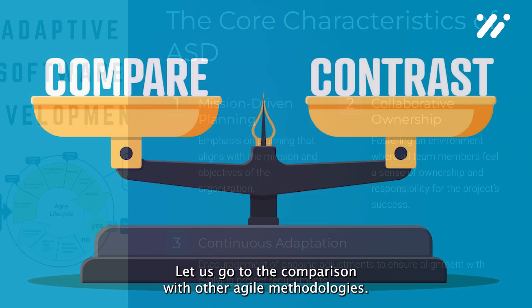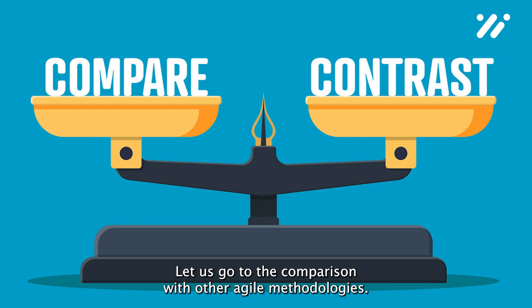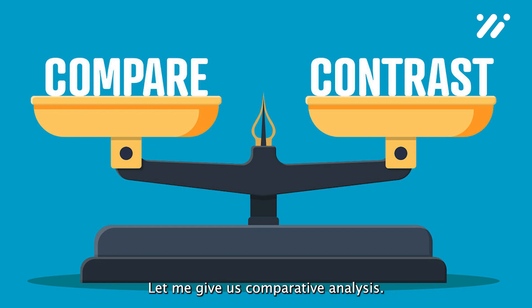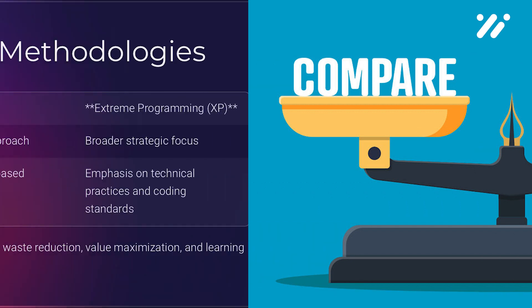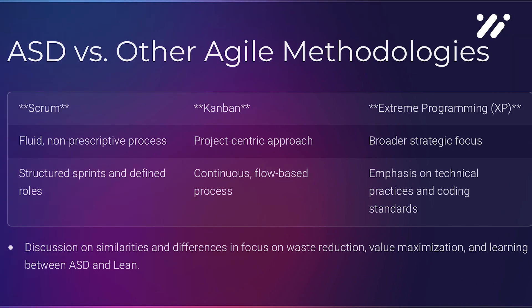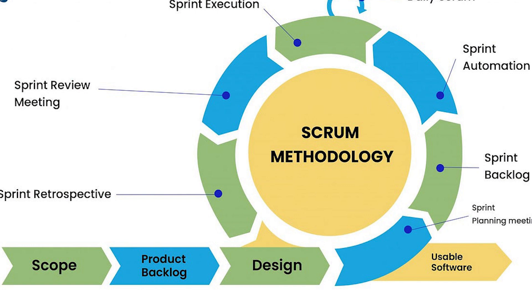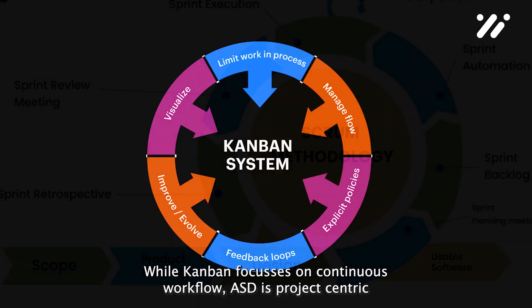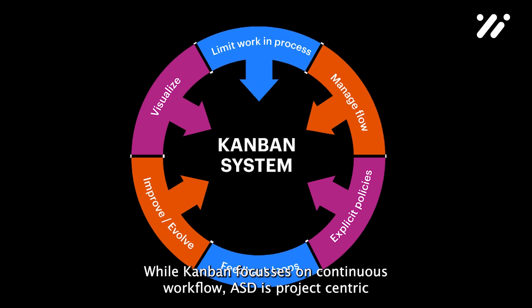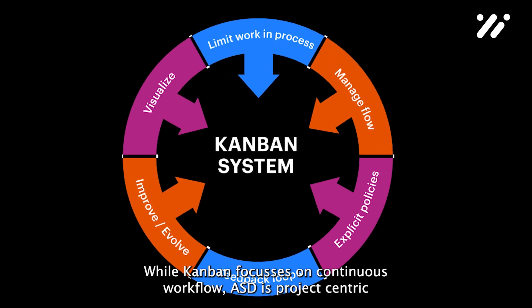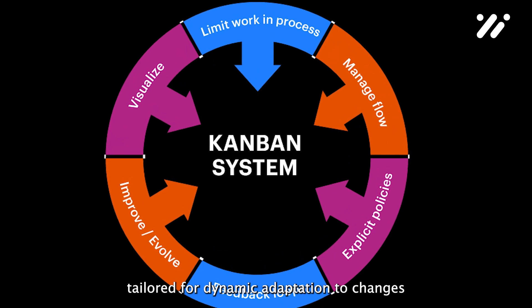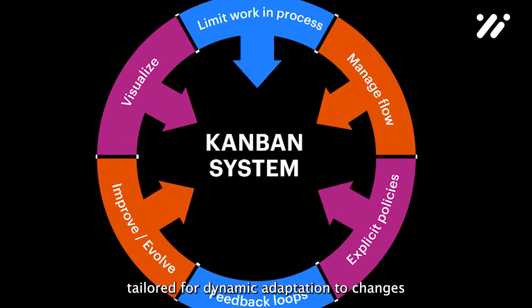Let us go to the comparison with other agile methodologies. Unlike Scrum's structured roles and sprints, ASD embraces a fluid, non-prescriptive process, allowing more freedom to adapt. While Kanban focuses on continuous workflow, ASD is project-centric, tailored for dynamic adaptation to changes.